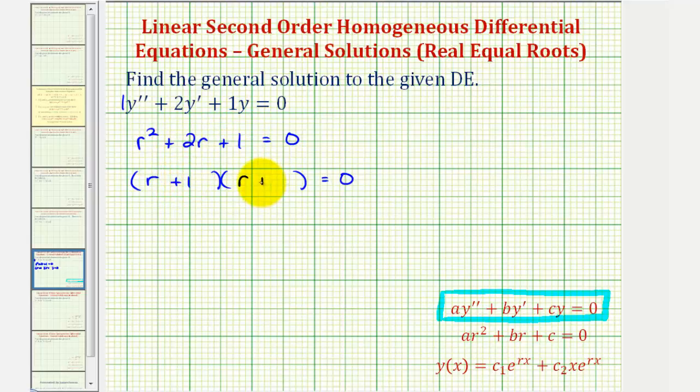Notice in this case, we have two factors of r plus one. And therefore, we have two real equal roots, or solutions, to the characteristic equation.